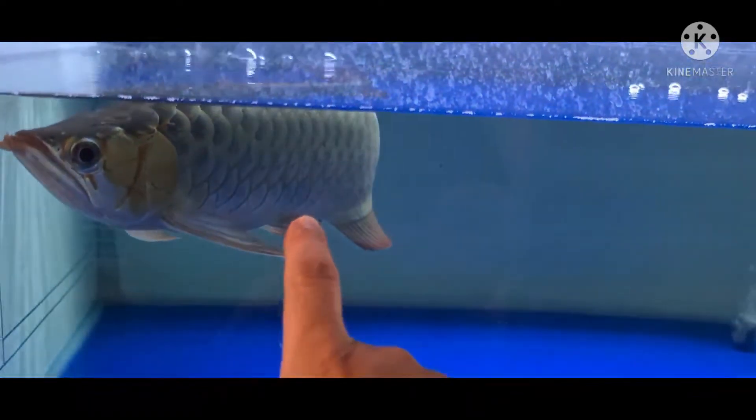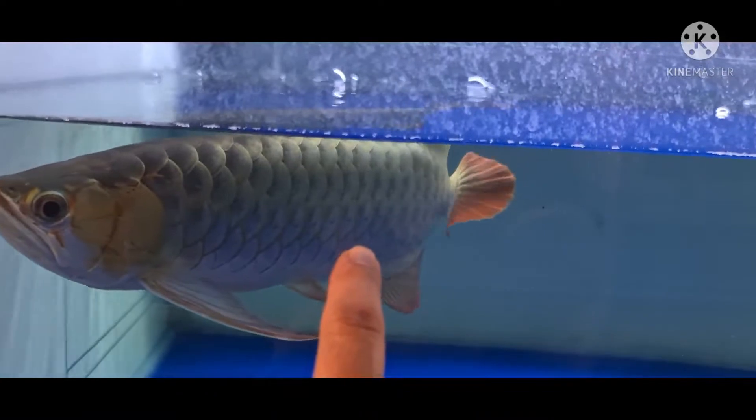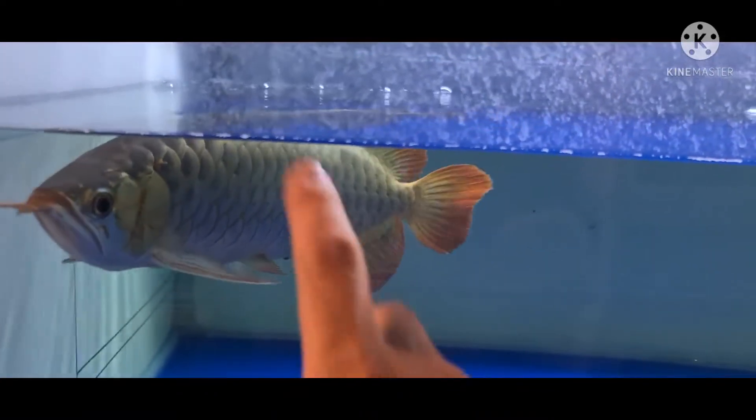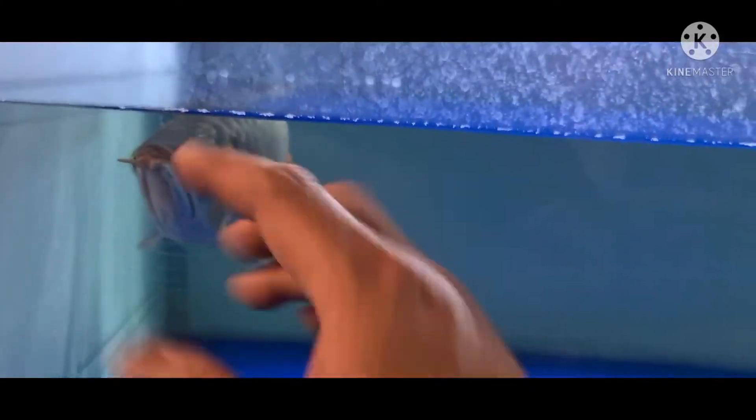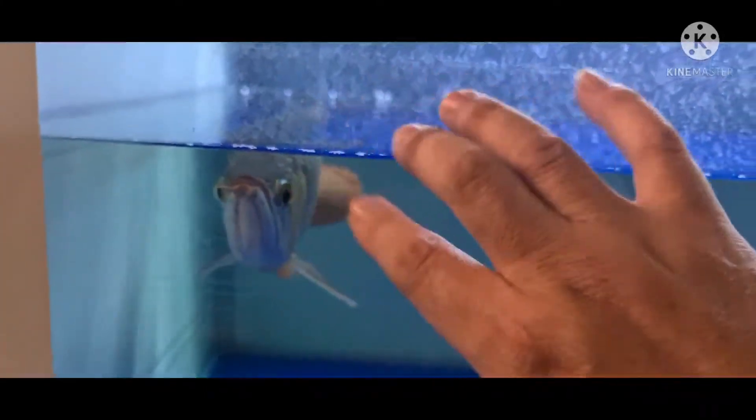Ya ini contohnya ya. Super red ini metaliknya lebih banyak dari yang tadi ya. Kalau merah ini sama yang tadi, lebih cepat naik yang ini karena ini metaliknya lebih banyak.